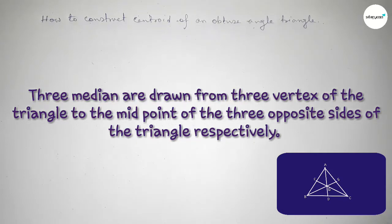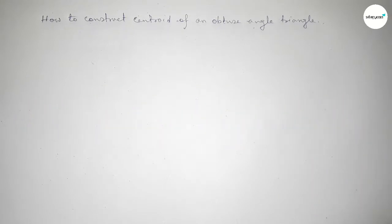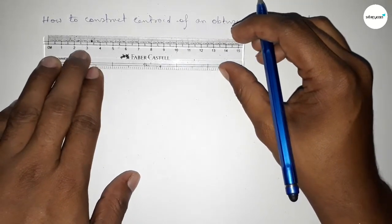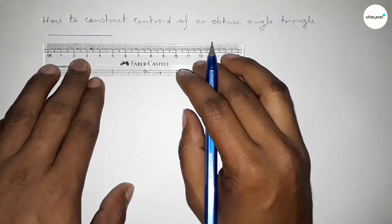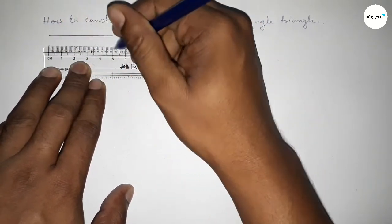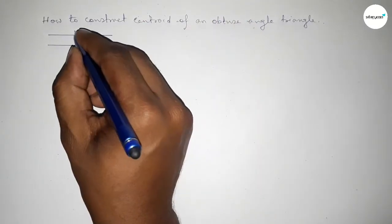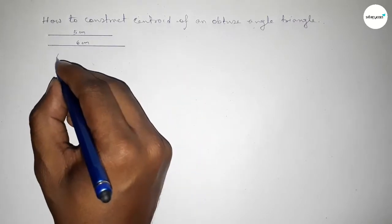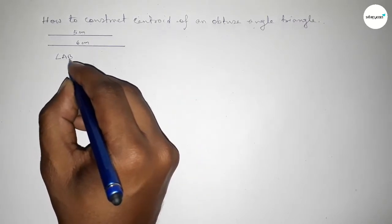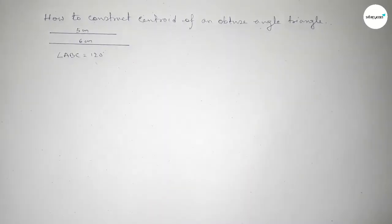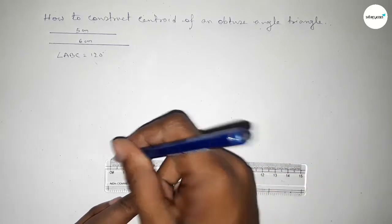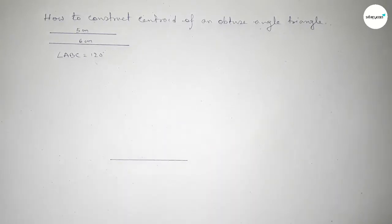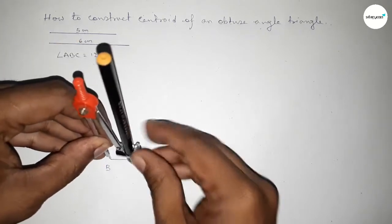First, drawing an obtuse angle triangle with sides of five centimeters and six centimeters, and angle ABC equal to 120 degrees. Drawing a line of length six centimeters, taking point B at one end and point C at the other. Now drawing a 120 degree angle at point B.